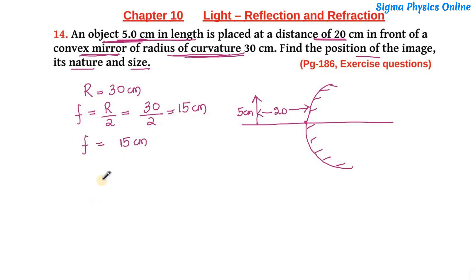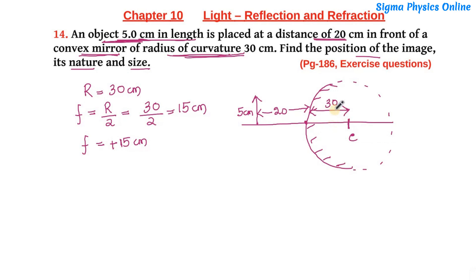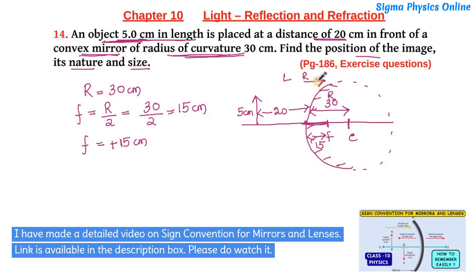Now let us put the proper sign to it. The focal length of a convex mirror is positive, so focal length f = +15 cm. Why is it positive? Because this mirror is a part of a sphere. The center of the sphere lies behind the mirror, and the radius of curvature is 30 cm. The focal length, being half of that, is located behind the mirror. Since we measure it going towards the right — in the direction of light — the focal length of this convex mirror is +15 cm.